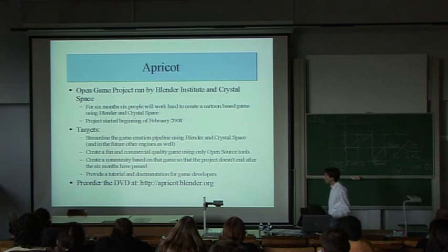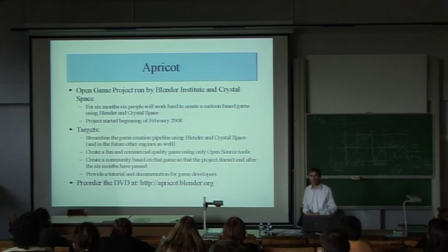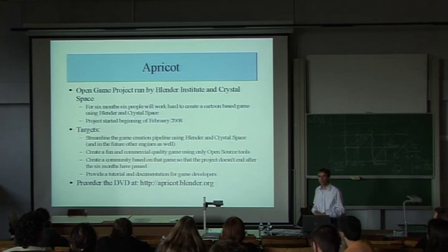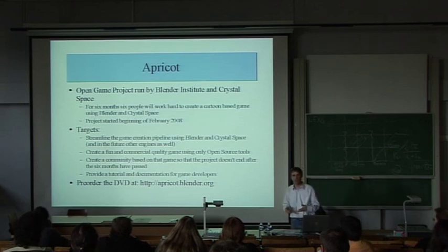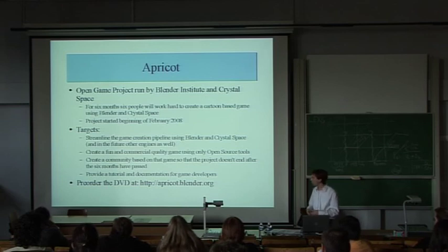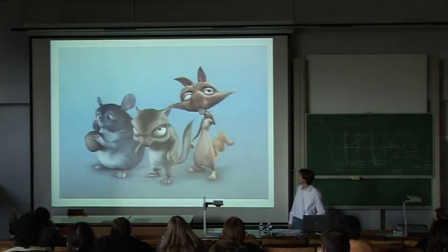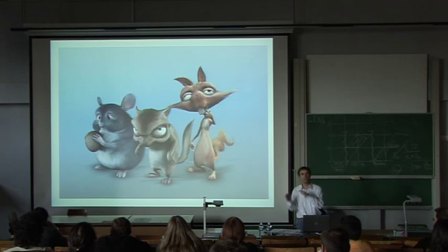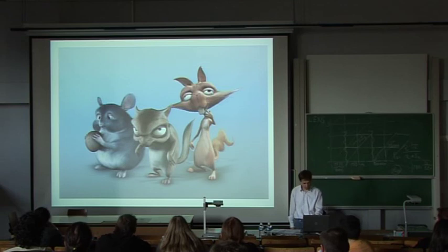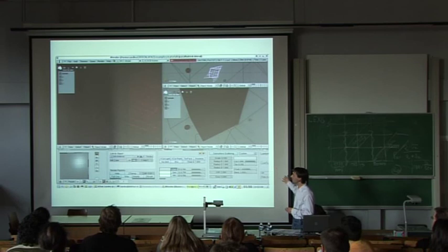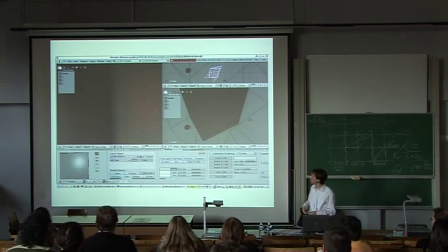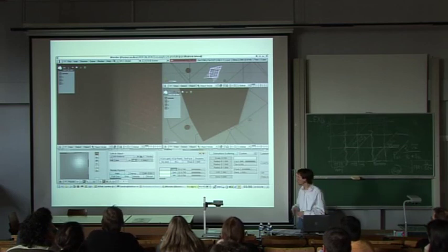Finally, the Apricot project — a new project started this month. It's a cooperation between Blender and Crystal Space, and the plan is to make an open game where all artwork and all sources will be open and published. You can already pre-order the DVD to help support it — six people are working on this permanently in Amsterdam right now. The Apricot project goes together with the Peach project, which is the open movie from Blender, and these characters are also going to be used in the game. One example shows Crystal Space integrated with Blender, making it easier to create games using both tools.